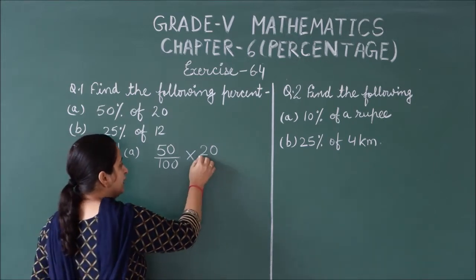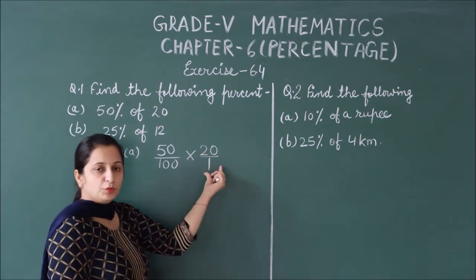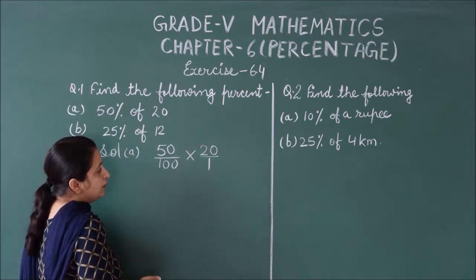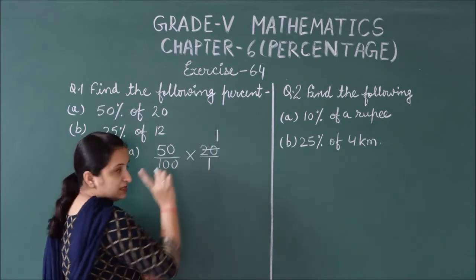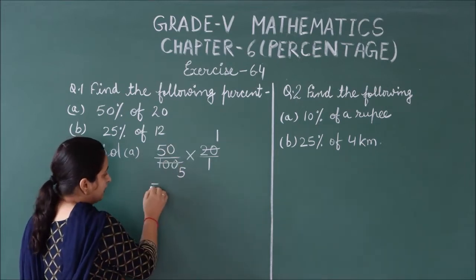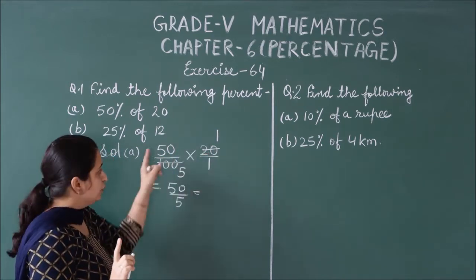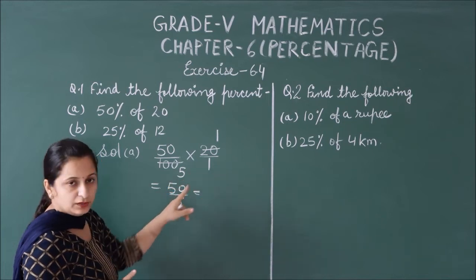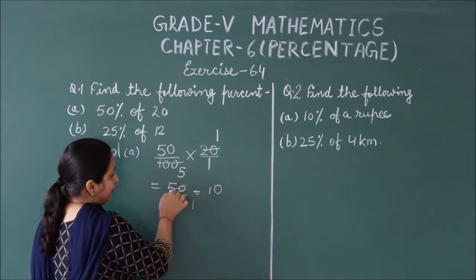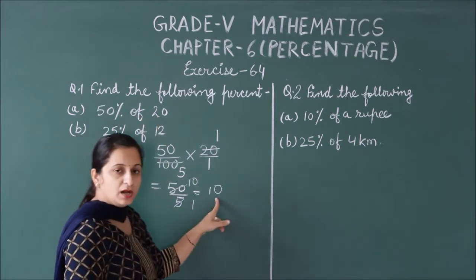We use it as a fraction. Cutting can be done: 50 and 100 — 50 into 1 is 50, and 5 into 1 is 5. So the answer is 10. That means 50% of 20 is 10.